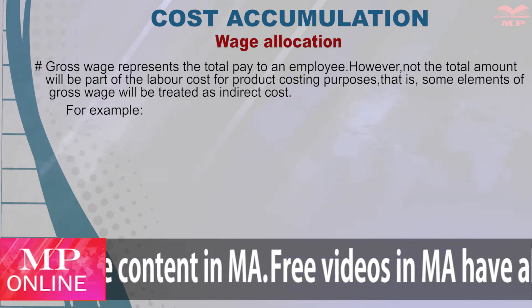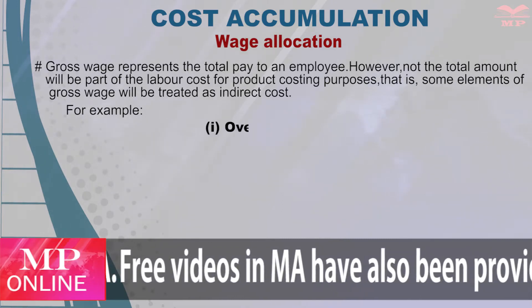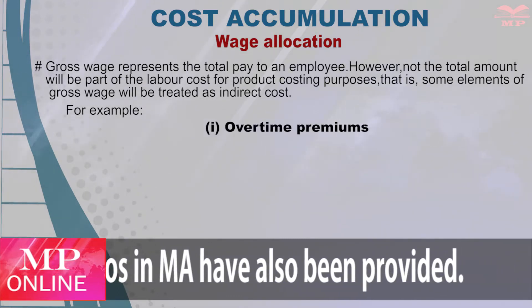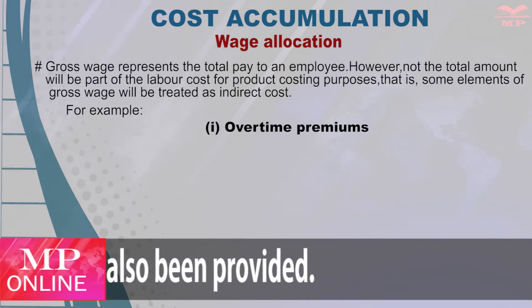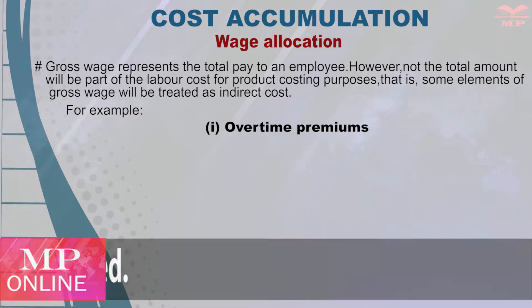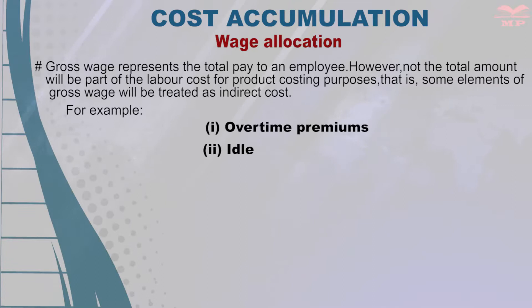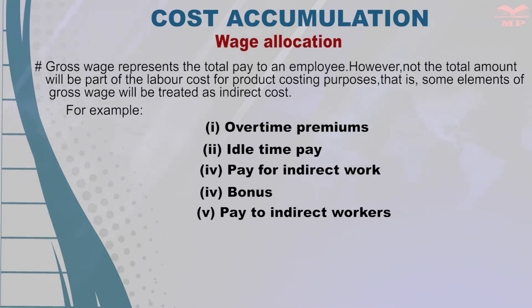The items we are going to look at under wage allocation are: first, overtime premiums; second, idle time pay; third, pay for indirect work; fourth, the bonus; and fifth, pay to indirect workers.